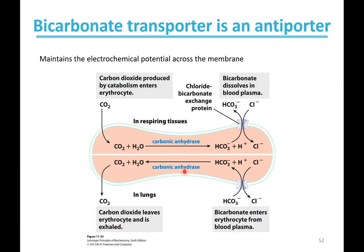Another transporter example from the bicarbonate cycle: in blood cells, CO₂ (relatively nonpolar) diffuses through the membrane, then carbonic anhydrase converts it to bicarbonate inside. A membrane transporter moves bicarbonate to the outside while simultaneously moving a chloride ion from outside to inside — this is an antiporter performing co-transport of two things moving in opposite directions.